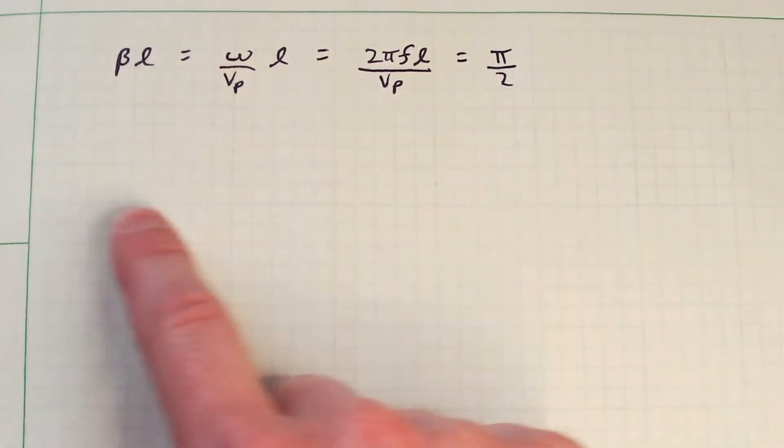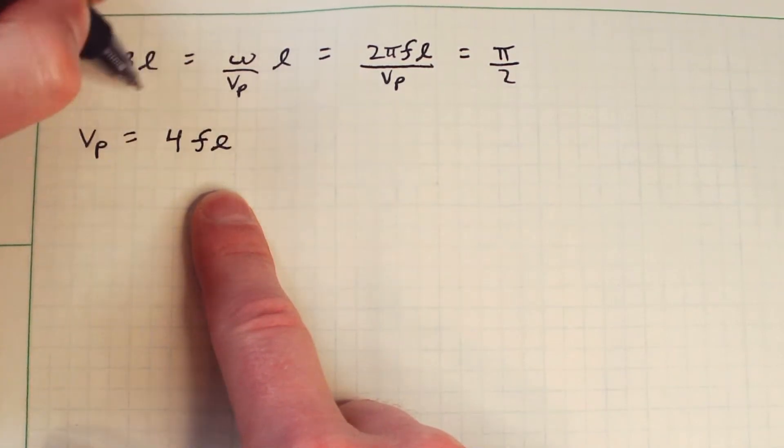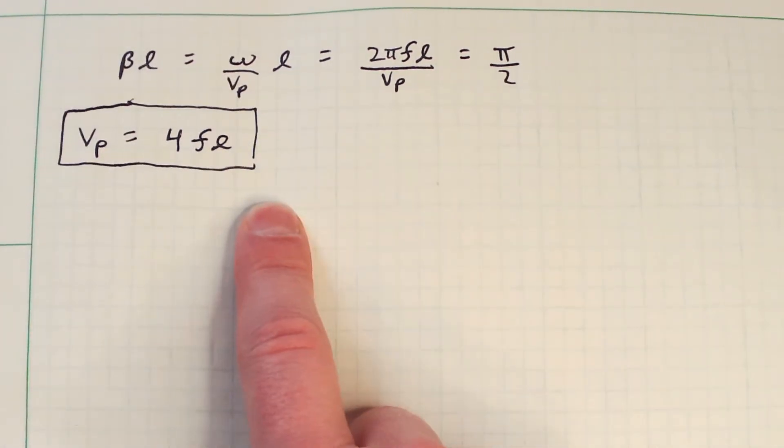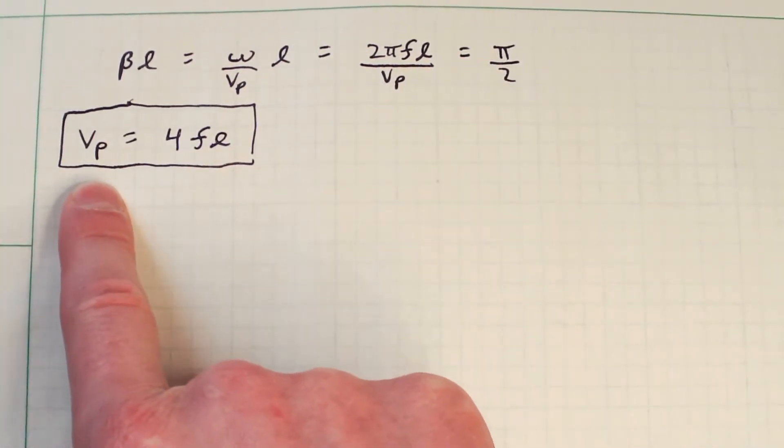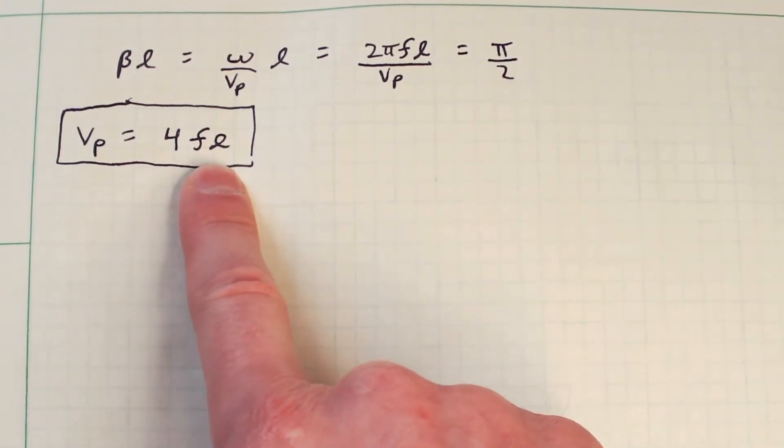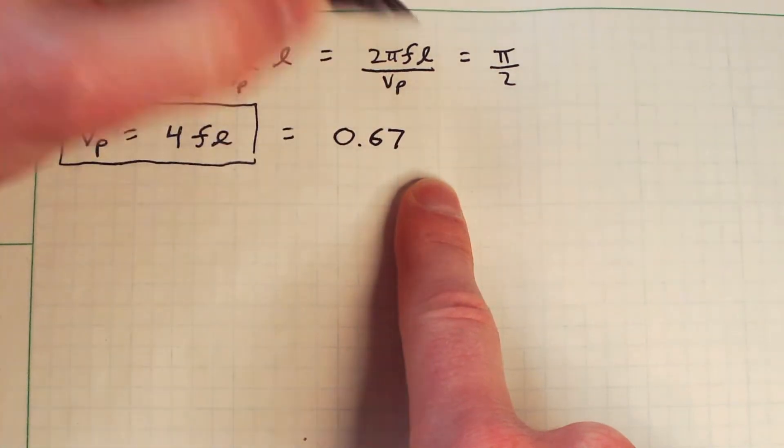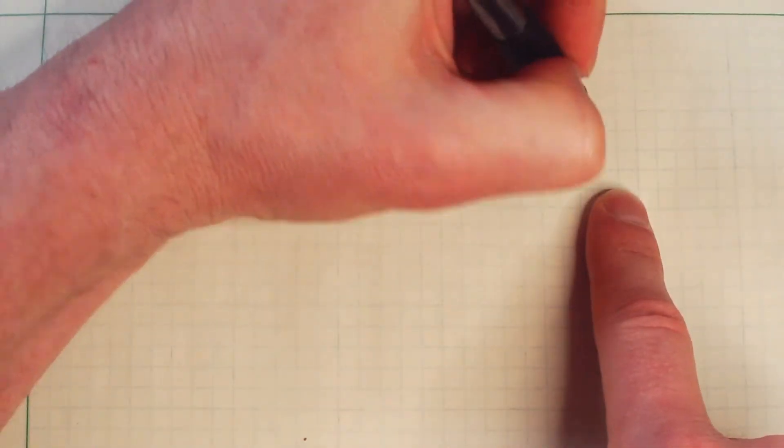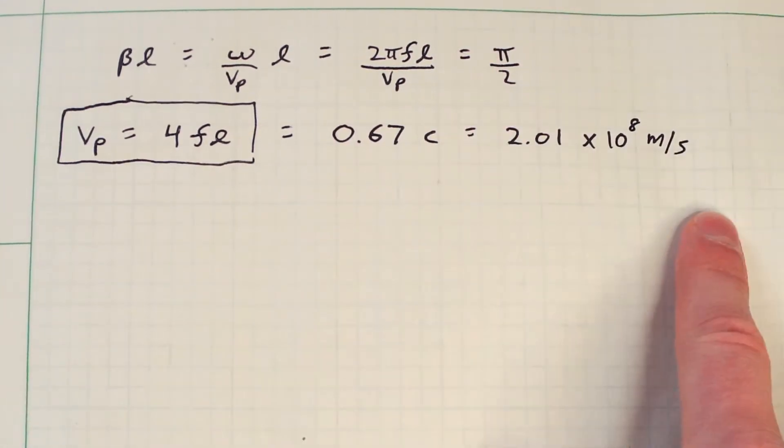So all I'm going to do is solve for Vp. And what you find is that Vp is equal to 4 times f times L. Just like that. So very simple. When the length is exactly a quarter wavelength or the length of the cable is one quarter wavelength, then we know that the velocity of propagation is 4 times f times L. So if you plug in the values, it's about 33 megahertz here and 1.52 meters here, you come out with roughly 0.67 times the speed of light, which is about 2.01 times 10 to the eighth meters per second. So you can plug in the values that I measured here and this is what you would get.